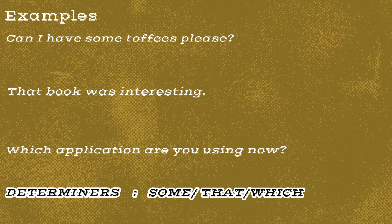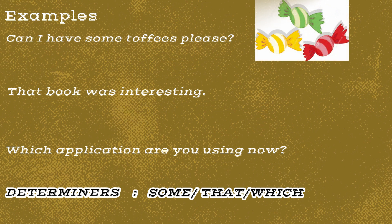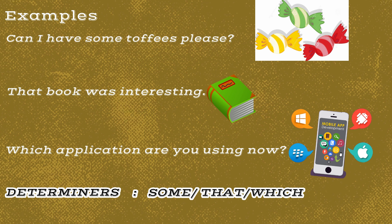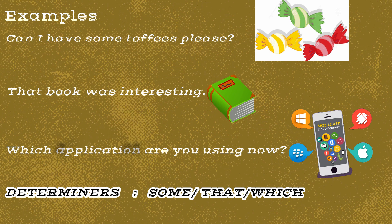Let's see the sentences again. Can I have some toffees, please? In this sentence, some is the determiner and refers to the noun toffees. That book was interesting — the determiner is that, referring to the noun book. Which application are you using now? Here the determiner which refers to the noun application.